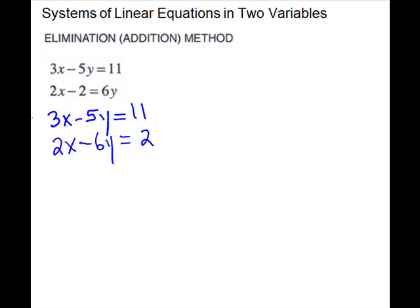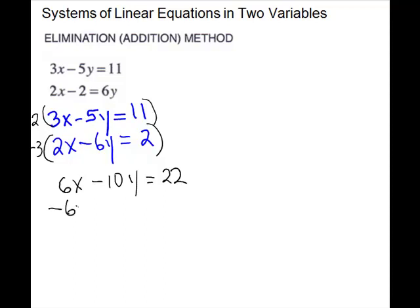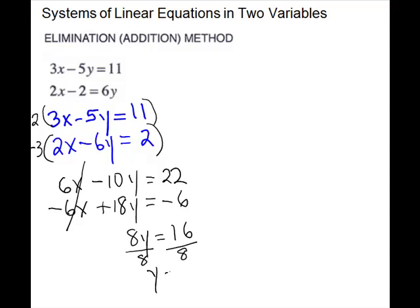So I will multiply 2 times the first equation and negative 3 times the second equation. 2 times the first equation gives me 6x minus 10y equals 22. Negative 3 times the second equation is negative 6x plus 18y equals negative 6. Now we can add them together — the x's will cancel, leaving me 8y equals 16. Divide by 8, so y equals 2.